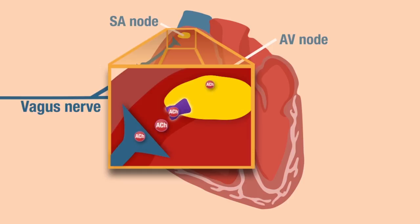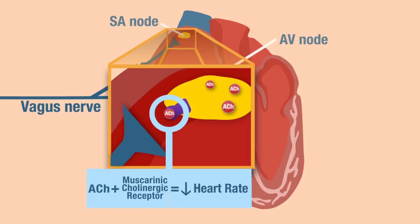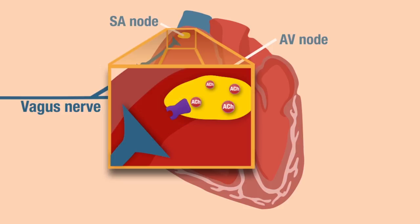When the neurotransmitter binds to these receptors, it's going to lower the heart rate. Remember, these are muscarinic cholinergic receptors, and therefore they generate slow responses.